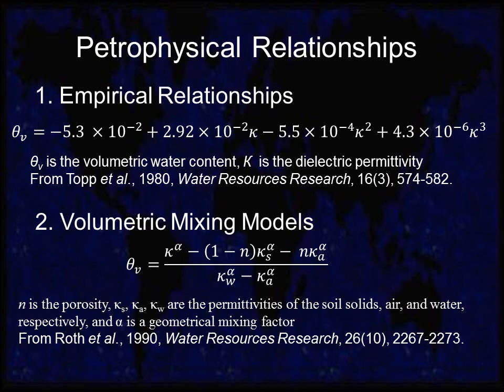The second type of petrophysical relationship is the volumetric mixing model. For volumetric mixing models, the volumetric water content is related to the bulk, or measured, dielectric permittivity of the soil — shown here as kappa — and the dielectric permittivity of the soil components: the permittivity of the soil solids (kappa sub s), the permittivity of air (kappa sub a), and the permittivity of the pore water (kappa sub w). Alpha is a geometric mixing factor usually assumed to be one half. One advantage of volumetric mixing models is they have shown under laboratory conditions to be more accurate than some empirical relationships. A main disadvantage is that porosity must be known to apply a volumetric mixing model. At many sites the porosity is unknown, or it varies across a field site with significant heterogeneity. Thus, although mixing models have been shown to be very accurate in the laboratory, in practice under field conditions, empirical relationships are more commonly used.